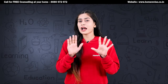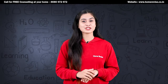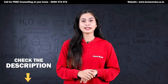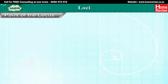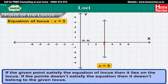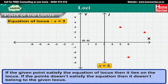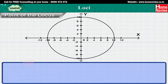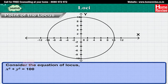If the given point satisfies the equation of locus then it lies on the locus; if the point doesn't satisfy the equation then it doesn't belong to the given locus. For example, consider the equation of locus x² + y² = 100. Let us name this as equation 1.